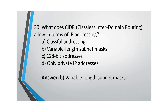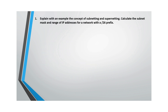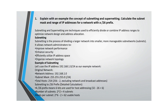Now moving to subjective questions. The first subjective question asks you to explain the concept of subnetting and supernetting with an example, and to calculate the subnet mask, range, and IP addresses for a /26 prefix network. The question and answer are shown here for you to review and memorize.